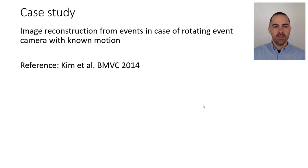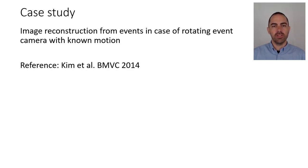So this is interesting because it's doing image reconstruction from events in the case of a purely rotating event camera. In this case we could assume that the motion is known. If we want to focus on image reconstruction, let's assume that we know the motion of the camera. For reference, the paper is by the group at Imperial College and appeared at the British Machine Vision Conference in 2014.